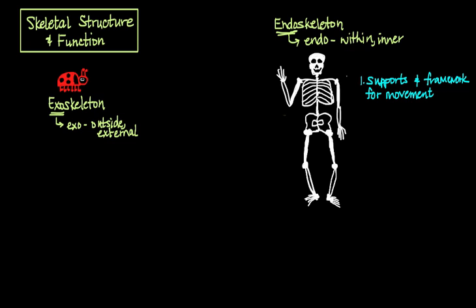Another important function of our skeleton is that it protects our most vital organs. If you look at the skull for example, it houses our brain, and the rib cage protects our heart and lungs and other organs. The third function of our skeleton is that it performs a variety of physiological roles in our body.